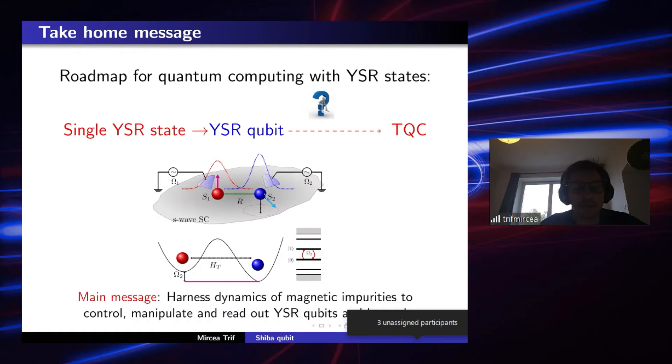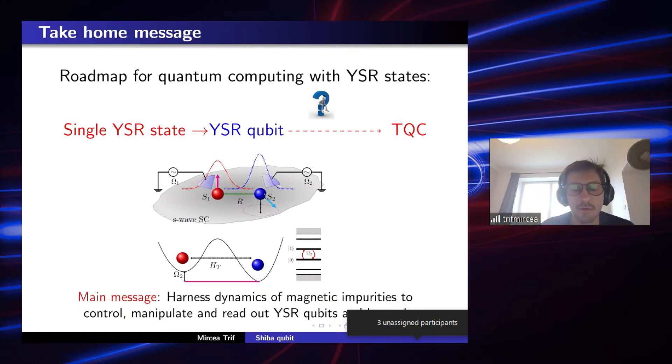So first of all, we already heard in the previous talk quite a lot about the Shiba States and Majorana modes and what's the usefulness for this mode so the long-term goal is to possibly build some kind of topological quantum computer.